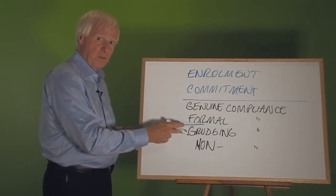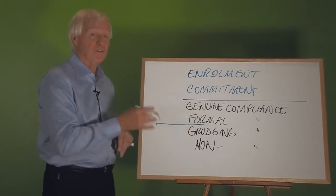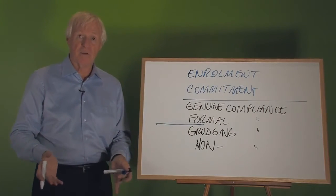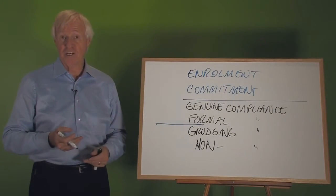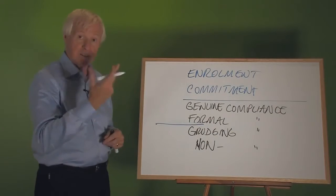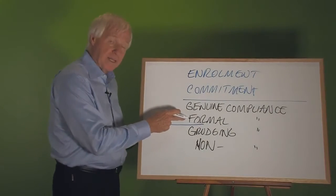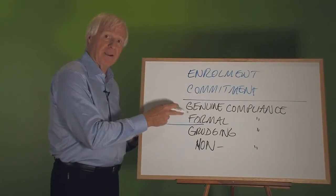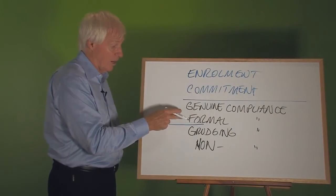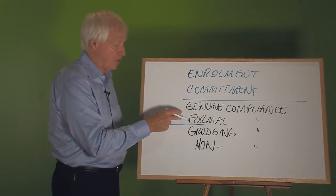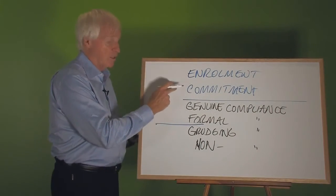If people have grudging compliance, say okay, if you don't support it, get it out on the table because maybe you've got some valuable information that will allow us to adjust our direction. Formal compliance is okay because over time they'll migrate as it unfolds the way it should, and they'll move to genuine and ultimately to commitment.